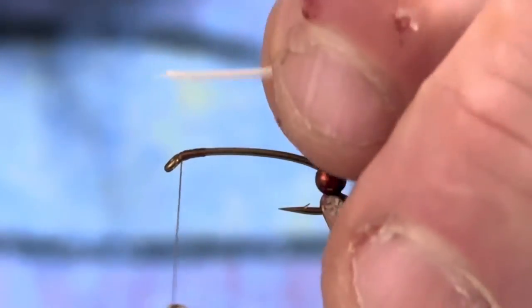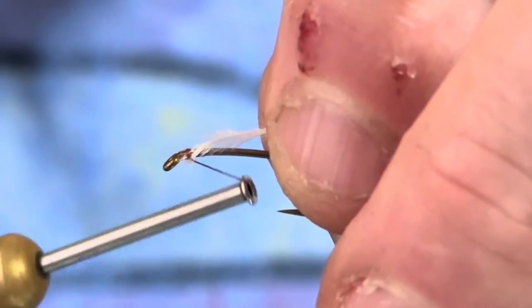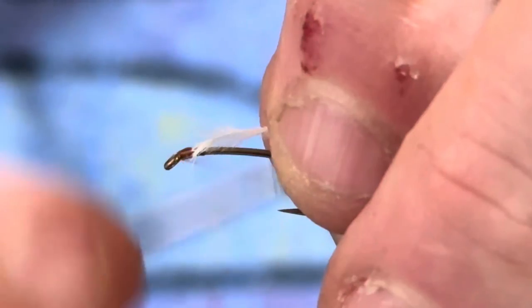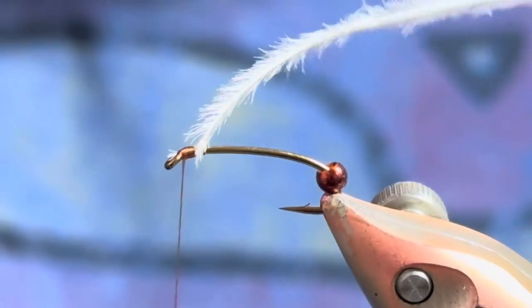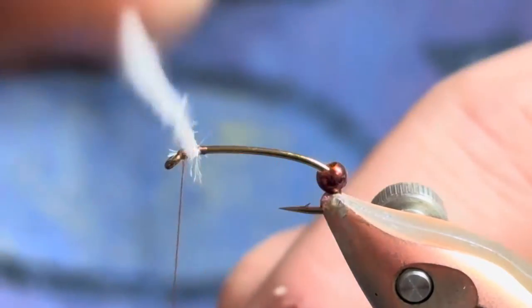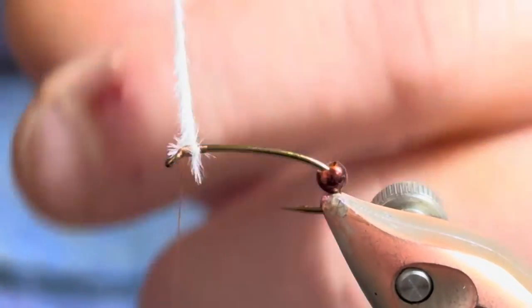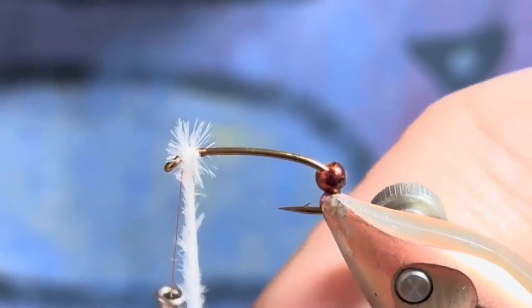This one I'm using the brown bead which is a more natural representation of the gills. So I'm just going to capture some white ostrich right up top here and then just give two or three turns of this right up front here.